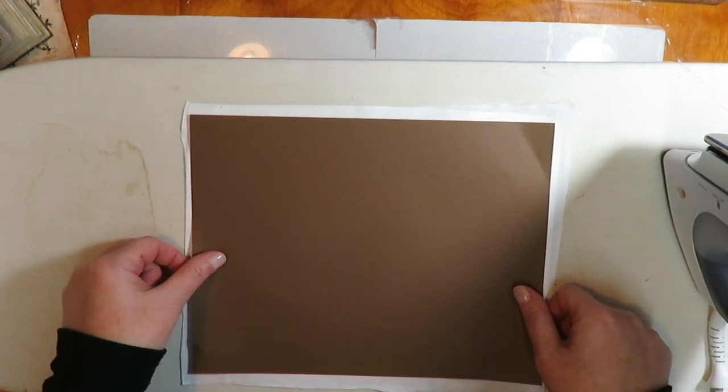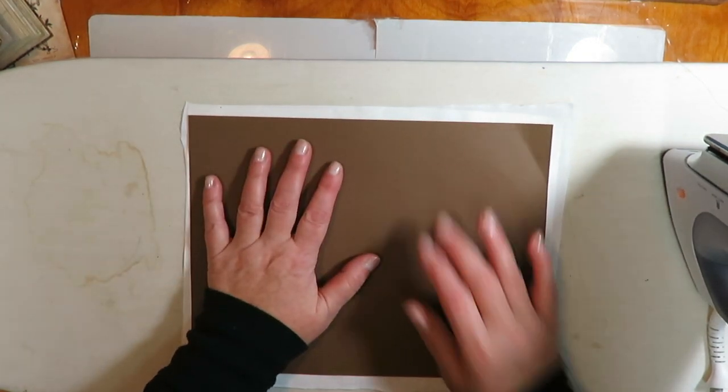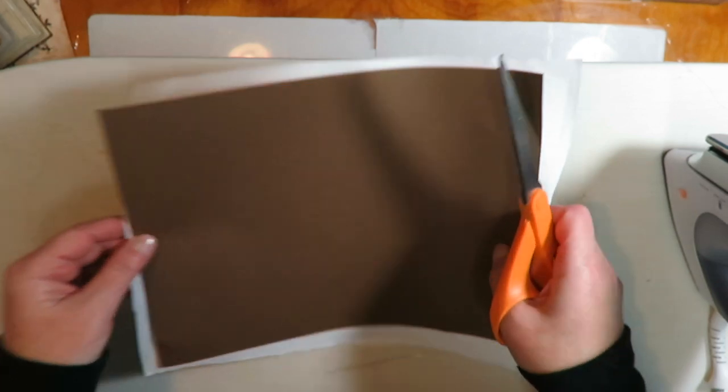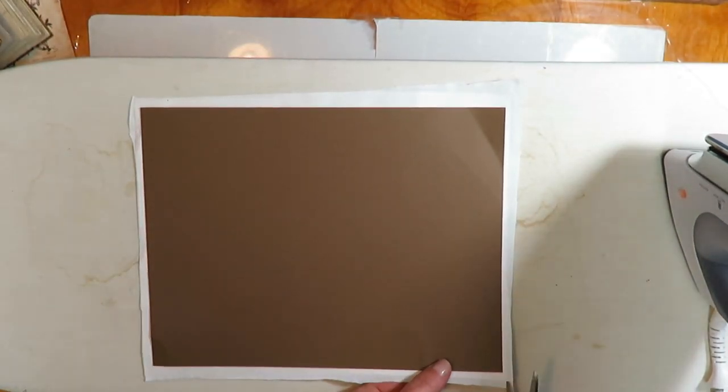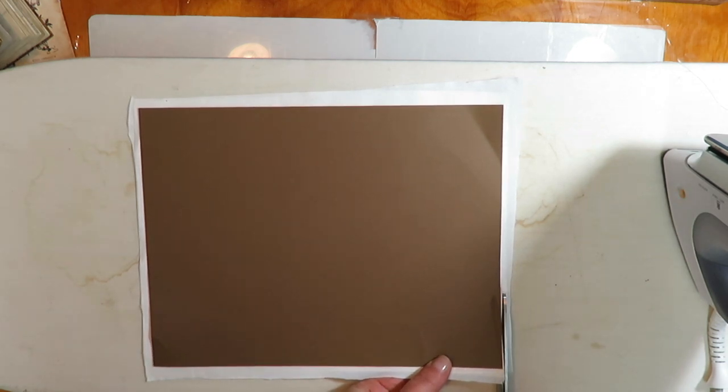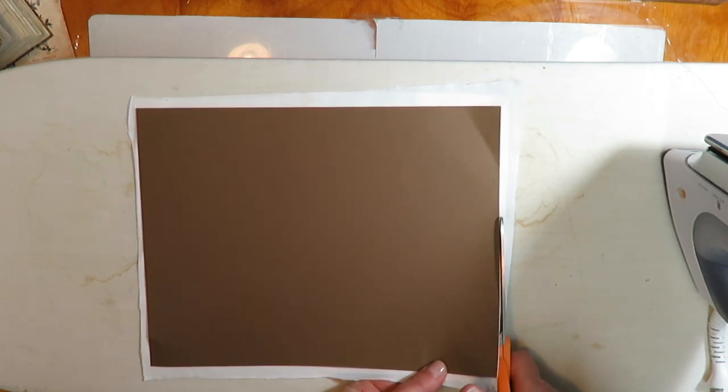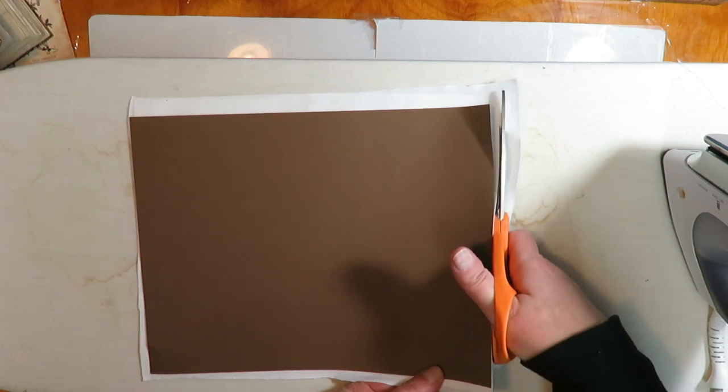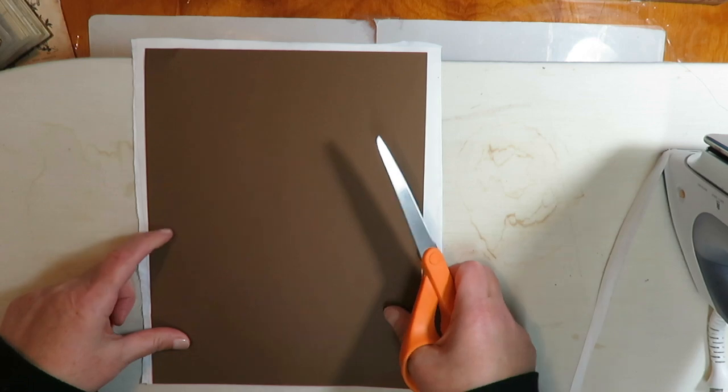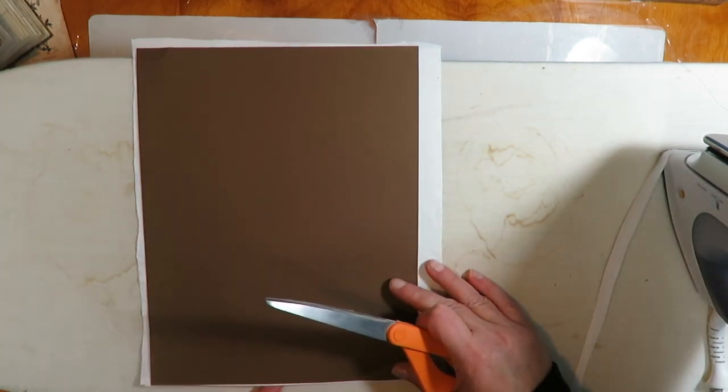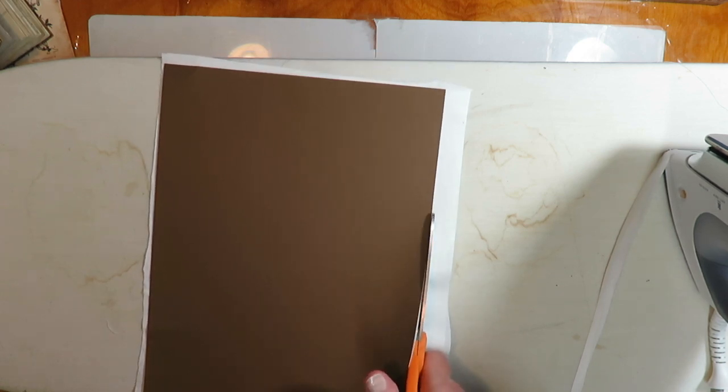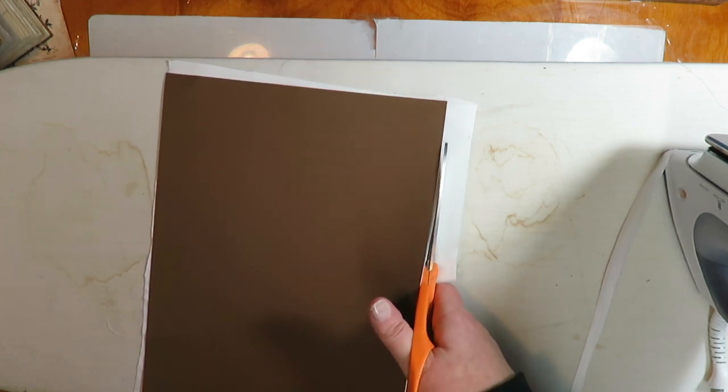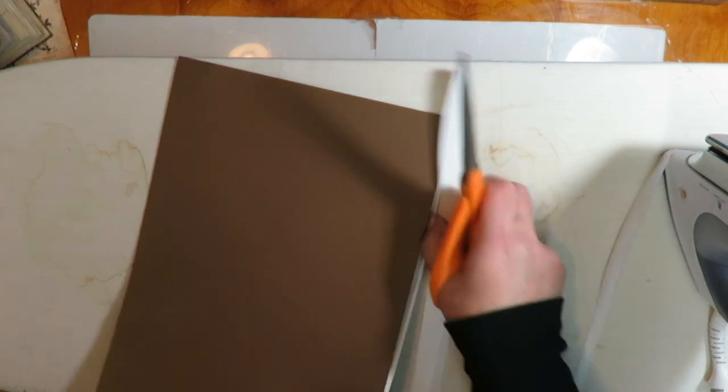I'm just going to trim it down to eight and a half by eleven. I've seen other tutorials and I know people have had trouble with it getting stuck and jamming up the printer. Luckily, I have never had that problem, but you want to get clean lines when you trim it down and you want it to be eight and a half by eleven so it does not get stuck.